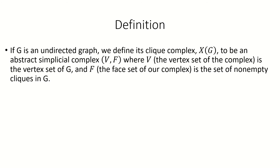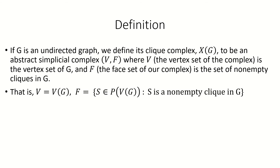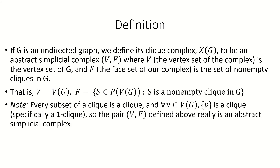Today we're going to look at clique complexes, a special type of abstract simplicial complex which itself we can view as a type of hypergraph. A clique complex of an undirected graph G, denoted by X of G, is an abstract simplicial complex whose vertices are the vertices of G and whose faces are the non-empty cliques of G. Note that because every subset of a clique is itself a clique, and the singleton sets containing each vertex in a graph are each one-cliques, X of G satisfies all the requirements of an abstract simplicial complex.